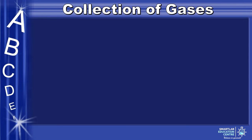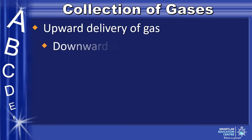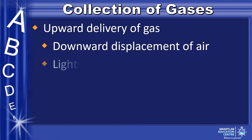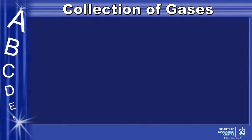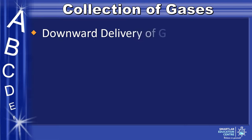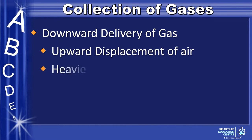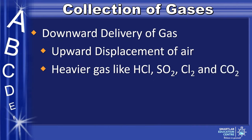There are different ways to collect gases. The first way is the upward delivery of gas, which involves downward displacement of air, and is usually used for lighter gases like hydrogen and ammonia. The second way is the downward delivery of gas, which involves the upward displacement of air and is usually used for heavier gases such as hydrogen chloride, sulfur dioxide, chlorine, and carbon dioxide.